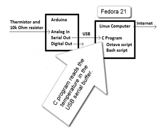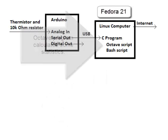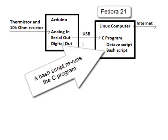The C program reads the temperature in a USB serial buffer. An Octave program calculates some statistics, and the Bash script reruns the C program.